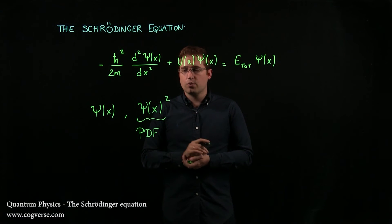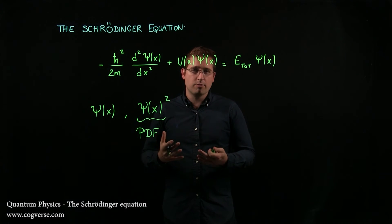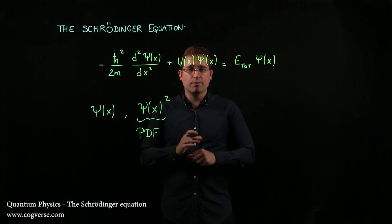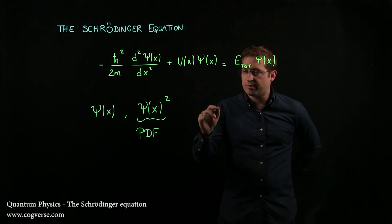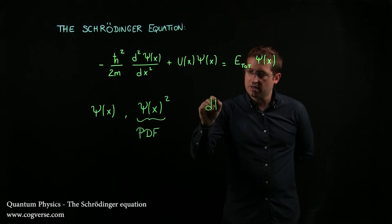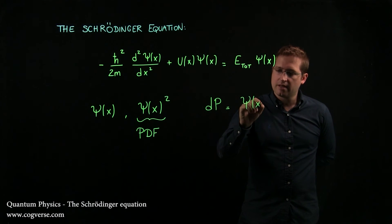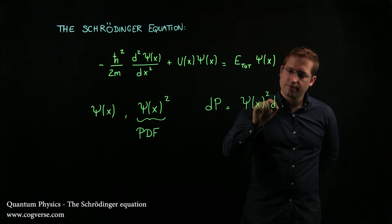And therefore, we can use ψ² to find the probability of finding a particle in a little interval of width dx. In fact, that probability, dP, is equal to ψ(x)² dx.